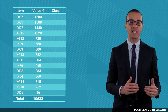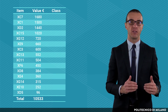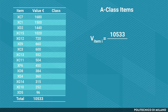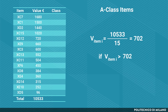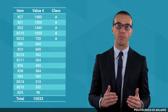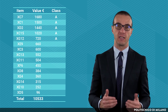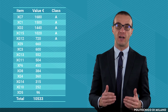Finally, let's find the three classes A, B, and C using a method based on tangent lines. To identify A class items, we compute the average value of the inventory for a generic item as the ratio between the total value of the stock, €10,533, and the overall number of different items, 15. If the value of the inventory of a specific item is higher than this average value, that item is an A class item. In our example, all items whose inventory value is higher than €702 are A class items — so the first five items are A class ones.